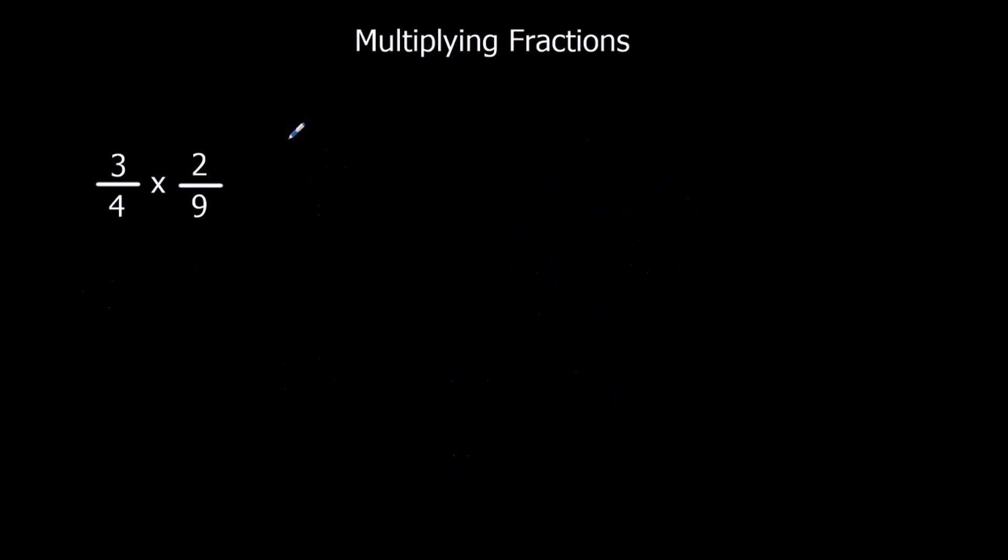So here's another example. So three times two is six, times the top. Four times nine, 36, times the bottom. Now this does simplify because both these numbers are in the same times table. They're both in the six times table. It's one times six and six times six. So that's the final ones.